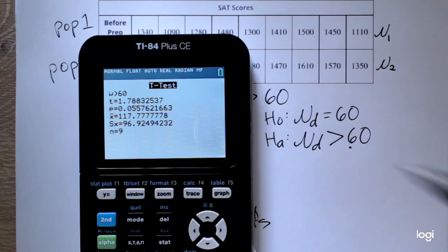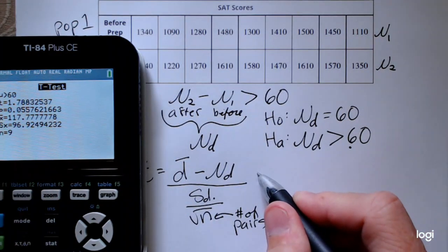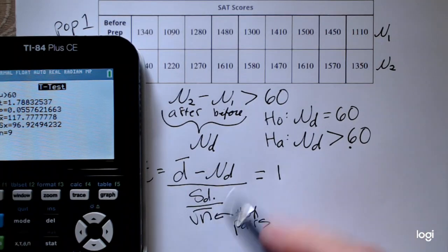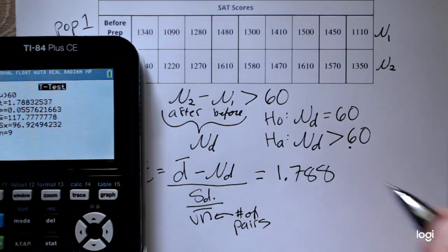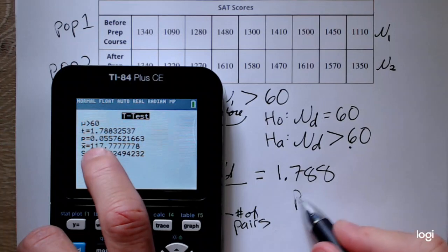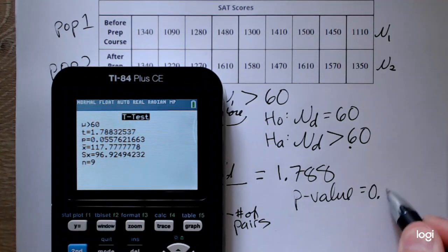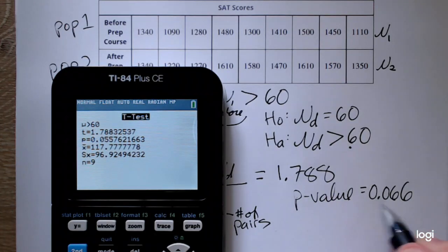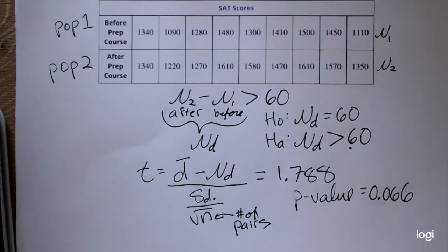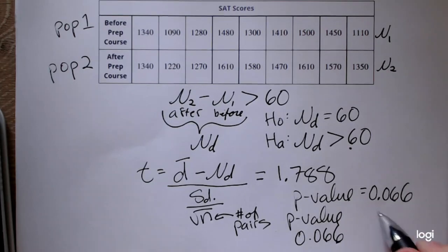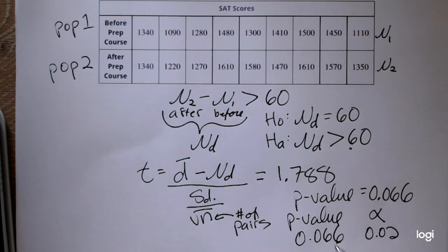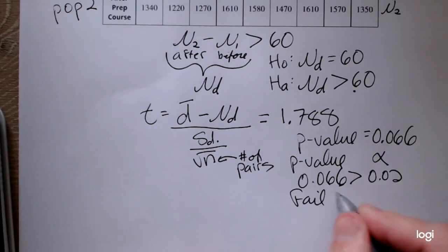My test statistic is 1.788. You would get the same thing if you had put in these pieces and calculated this by hand. And I can see that my corresponding p-value is 0.066. Already looking at this p-value, I know that I'm going to fail to reject at a level of significance of 0.02, because this p-value is greater than 0.02. So I have my p-value 0.066, my stated alpha level of 0.02.